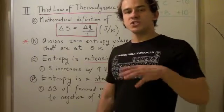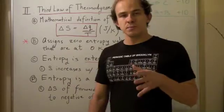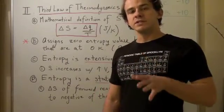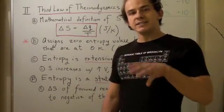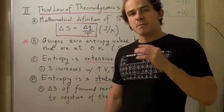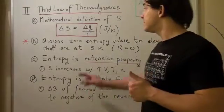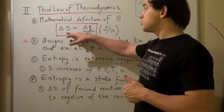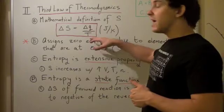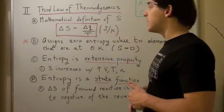The last thing we should talk about is the third law of thermodynamics. Before we get into that, let's define entropy mathematically using a formula. The formula for entropy is as follows: change in entropy equals change in heat over temperature, with units of joules per Kelvin.